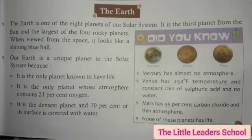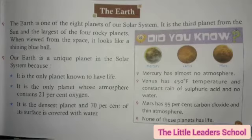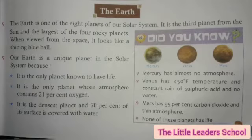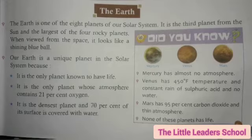Whose atmosphere contains 21% oxygen. जो ये planet है, पृथ्वी हमारा जो है, इसके वायुमंडल में 21% oxygen पाई जाती है. Clear हो रहा है सभी को? It is the densest planet and 70% of its surface is covered with water. ये बहुत ही घना है और इसका 70% जो हिस्सा है वो पानी से ढका हुआ है, यानिकि पृथ्वी के चारों तरफ 70% पानी ही पानी है.